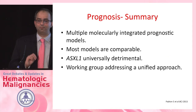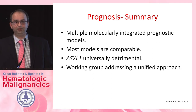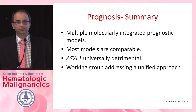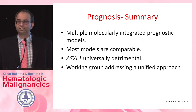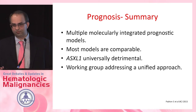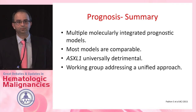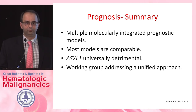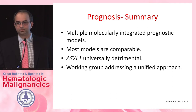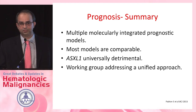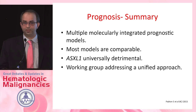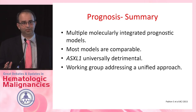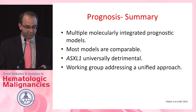Currently there are multiple molecularly integrated prognostic models — the Mayo Molecular Model, the GFM model, and the CPSS model. Dr. Padron at Moffitt performed a side-by-side comparison using elaborate statistics, and currently the statement is that all are comparable with each other. The take-home message is that regardless of the model used, the one mutation that very universally has been shown to be detrimental is ASXL1 — restricted to nonsense and frameshift mutations, as these are the only ones that truncate the protein. We have an MDS-MPN working group currently trying to address this discrepancy to come up with a unified approach on the lines of the revised IPSS.